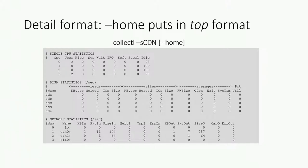Where this gets really important is nowadays, because Collectl was written when somebody having a two-core system was fat city — now it's not unusual to have systems with 48 cores or more. When you have a 48-core system, if your CPU load is 3%, does that mean your average CPU is running at 3%? Hell no. I've seen systems at 3% load where one CPU was at 100%. So it becomes more important to be able to drill into the individual CPUs.